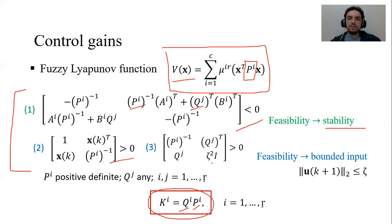The same for equations two and three. If these LMIs hold true, we guarantee stability using bounded control inputs.